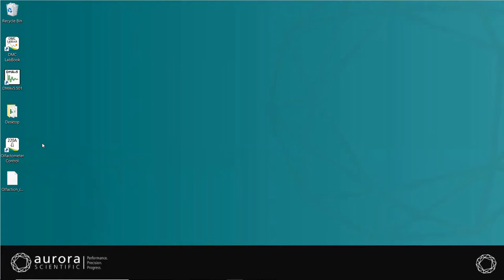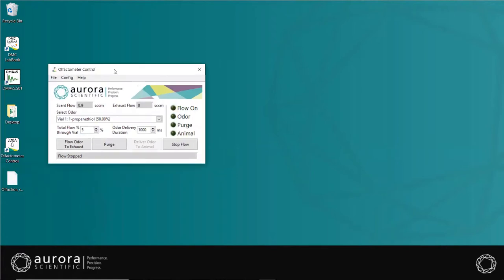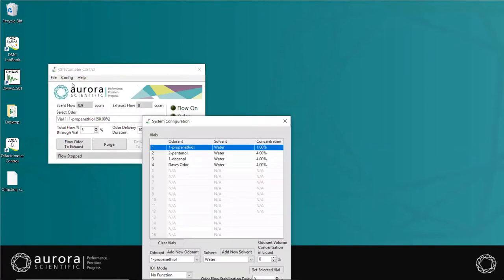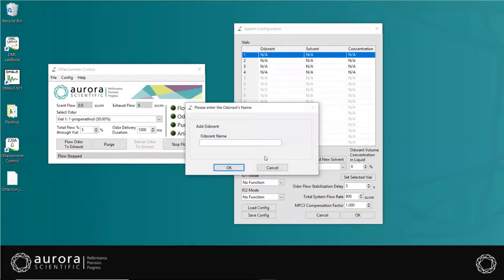Launch the 228 olfactometer control program located on the desktop. First thing you'll need to do is configure the vials in your system to indicate what odorant is in each individual vial. Click on config, configure system, to open the system configuration window. If you have previously configured the vials as seen here, you can clear them by clicking clear vials. However, if this is the first time you've used the program, you'll need to add odorants and solvents that will be used along with the concentration of each odor in liquid. Click on line 1, then add new odorant. Here, type in the name of the odorant you wish to add. And then click OK.